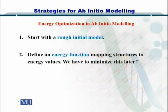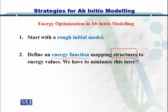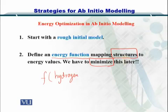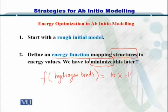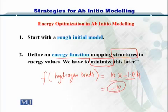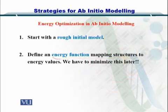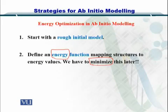Next, you have to create an energy function — that is, you have to compute the energy of the structure and minimize it. For example, a simple energy function could be the number of hydrogen bonds within a structure. If you have 10 hydrogen bonds and each gives out an energy of minus 1, then the overall energy of the structure will be minus 10. If you minimize this, then the structure created by giving out that much energy is the most viable one.